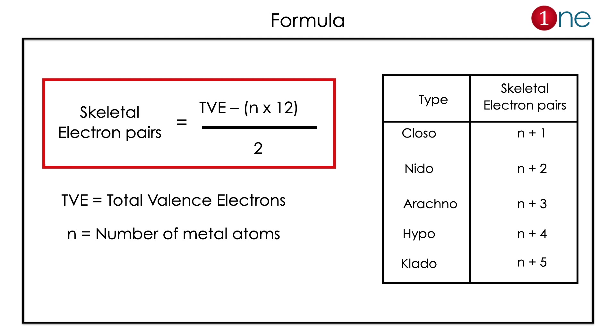Here, total valence electron calculation is important and number of metal atoms decides the vertices. So if you find n+1 skeletal pairs it's closo, n+2 is nido, and so on and so forth. Memorize the formula and memorize the structural details.